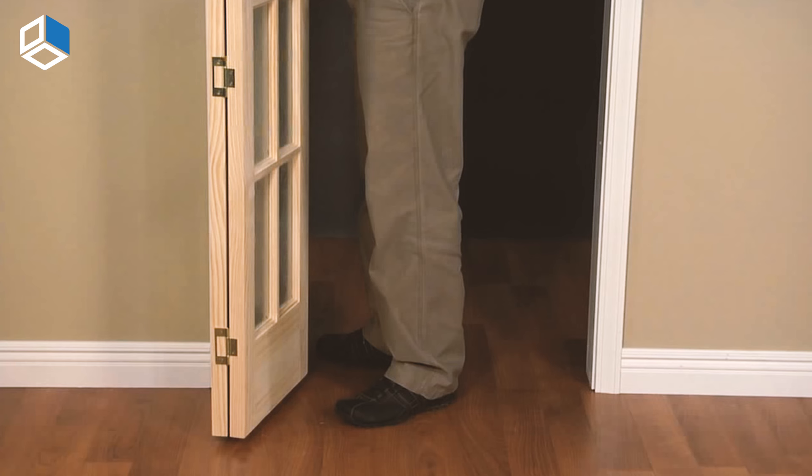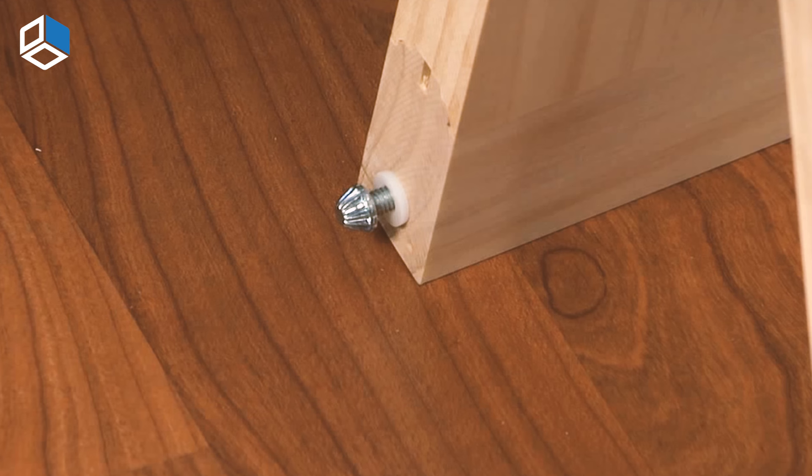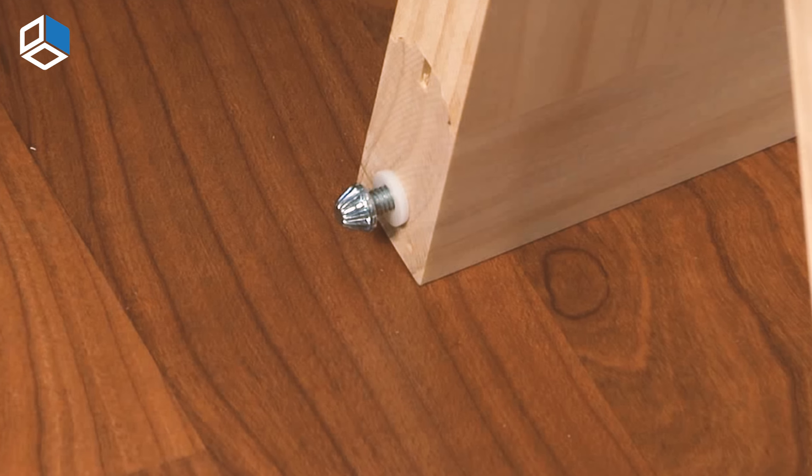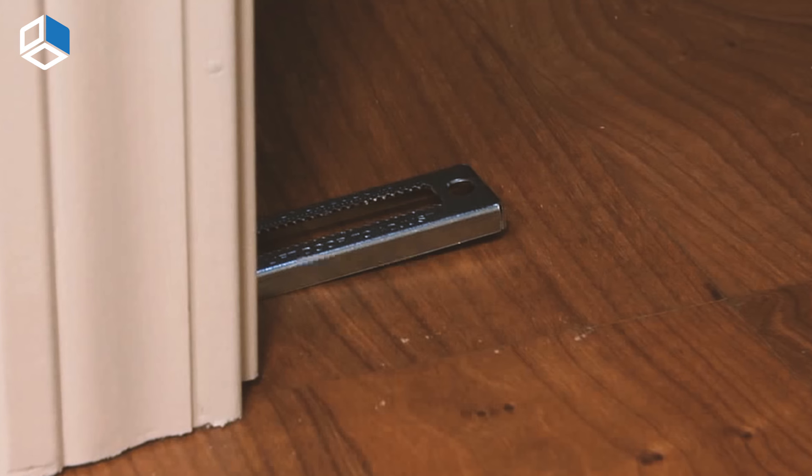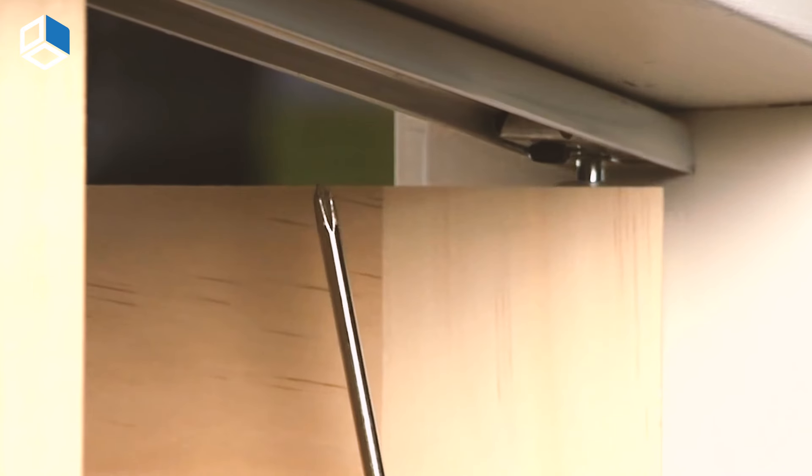The door height can be adjusted by slightly lifting the panels and turning the threaded stem of the bottom pivot. You should seat the bottom pivot into the jamb bracket at the desired height. Make sure the door is plumb with your opening and not rubbing against the door jamb.